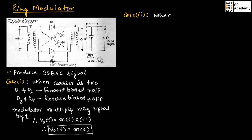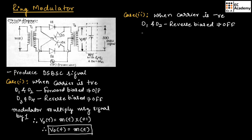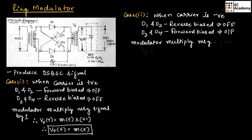Now let us consider case 2. When the carrier signal is negative, diodes D1 and D2 are reverse biased — hence these two diodes will be off — and diodes D3 and D4 will be forward biased. Hence, we will get the output voltage across transformer T2. The modulator multiplies the message signal by -1. Therefore, V0(t) = M(t) × (-1) = -M(t).